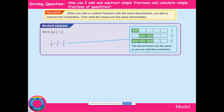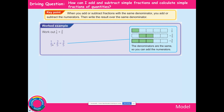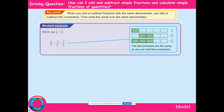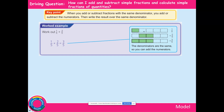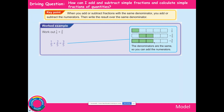For example, 1 fifth add 2 fifths: the fifths stay the same, we're adding 1 add 2 equals 3. You could think about it as 1 apple add 2 apples — you're going to have 3 apples, not 3 oranges. The denominator stays the same. 1 fifth add 2 fifths equals 3 fifths. There's a diagram here showing this has been divided into 5 pieces — 1 fifth add 2 fifths equals 3 fifths.